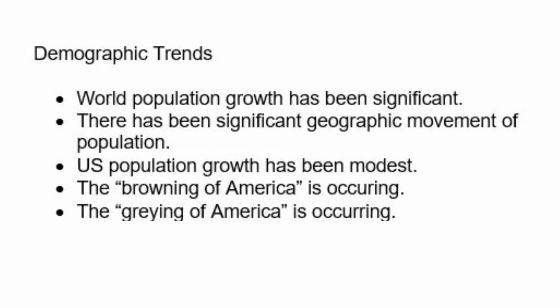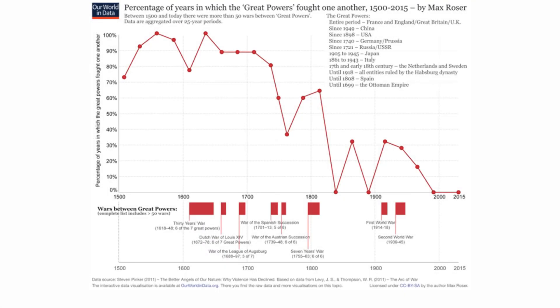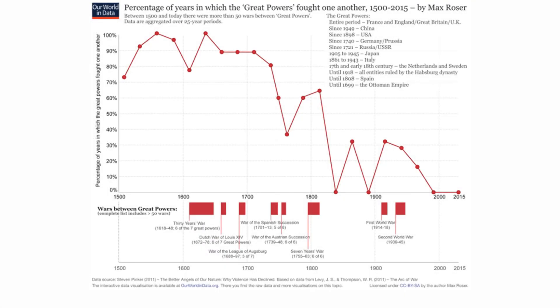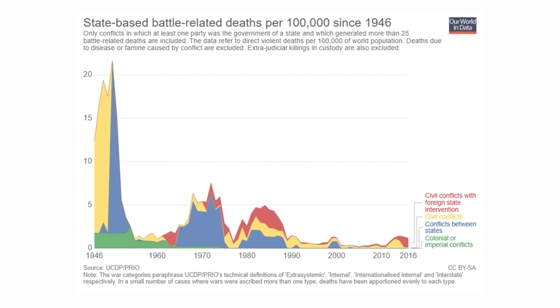These are some of the demographic trends that we have seen. Now let's turn to political trends. Compared to prior centuries, wars among great powers have become less common. Here you see a chart of wars between great powers since 1500. While we are very conscious of the deaths in conflicts in the Middle East and elsewhere in recent years, the number of battle-related deaths is relatively low compared to prior periods.